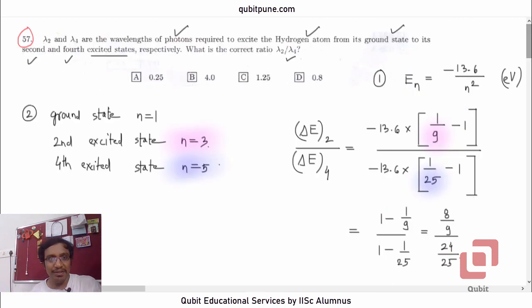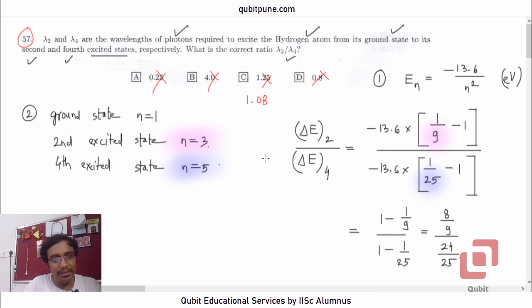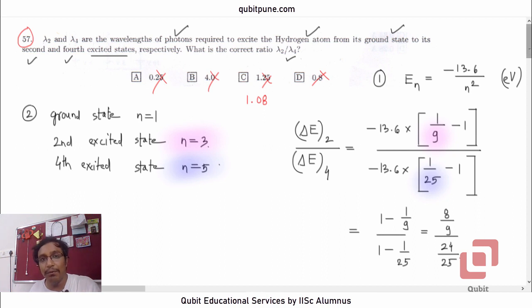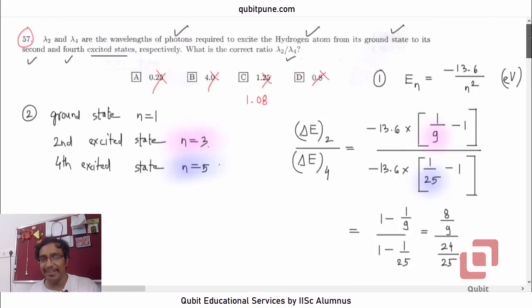1.08 is not among the given options, so none of the options is correct. The correct ratio is 1.08. If you refer to the official key, even there for the 57th question, they have not given any correct option because there isn't one. The correct ratio is 1.08.